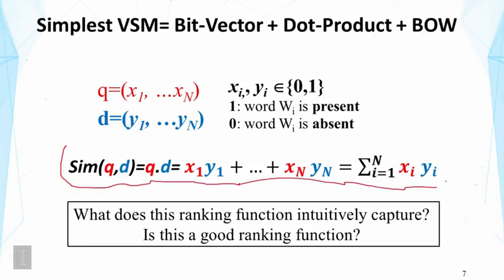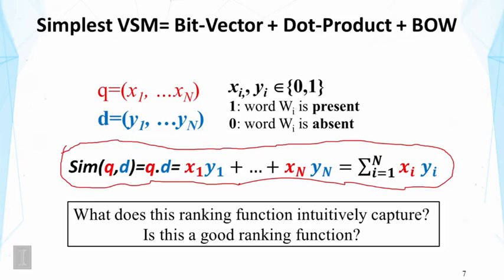This formula is a particular retrieval function — a ranking function — that we can now implement in a programming language to rank documents for a query. At this point you should pause the lecture to think about how we can interpret this score. We've modeled the retrieval problem using a vector space model, made assumptions about how we place vectors, and derived a specific retrieval function. The next step is to think about whether it actually makes sense.